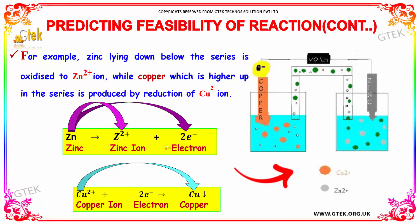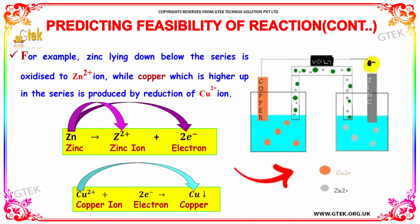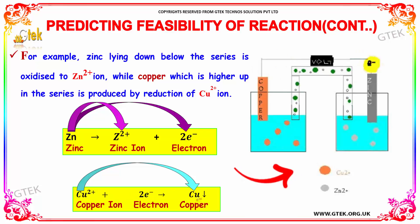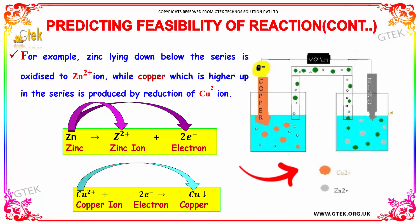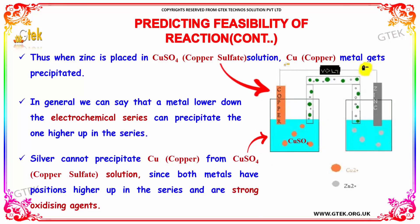If a zinc metal is present, it gives Zn²⁺ ion with a release of two electrons. Whereas copper ion, when combined with those electrons, gives copper metal. Thus, when zinc is placed in copper sulphate solution, copper metal gets precipitated.